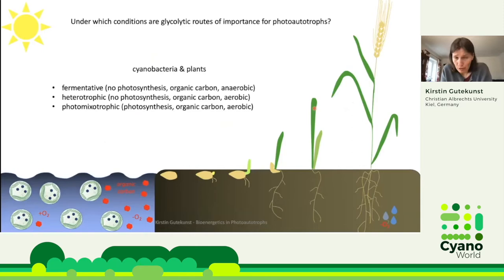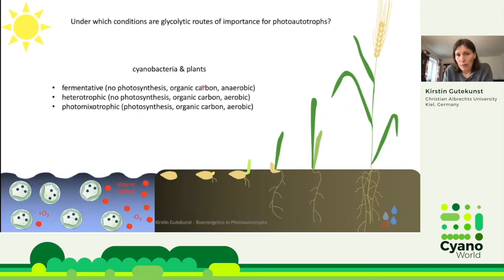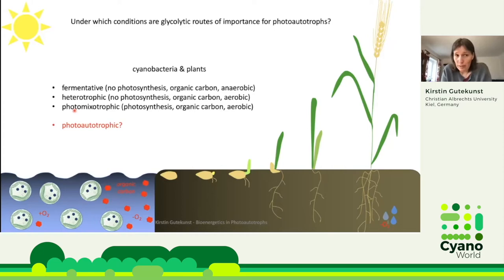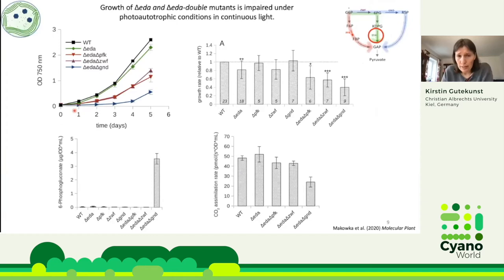Now, to consider under which conditions these glycolytic routes play a role under photo-autotrophic conditions: it's somewhat counterintuitive at first, because under continuous light the light reactions provide ATP and NADPH, and the Calvin-Benson cycle provides all intermediates otherwise provided by glycolytic routes. When we made double mutants — knocking out the ED pathway in addition to either PFK, ZWF, or GND — we got mutants that really grew worse under photo-autotrophic conditions. Especially the EDA-GND mutant, where the ED pathway and OPP pathway were both knocked out, had real problems growing.